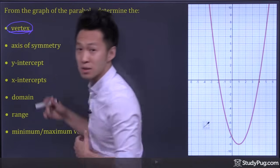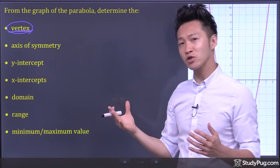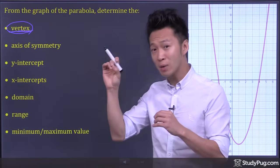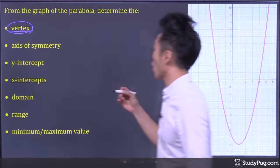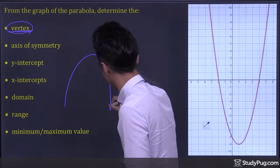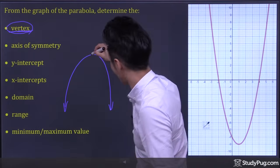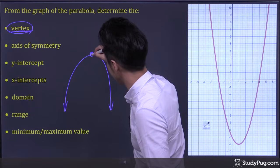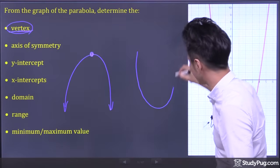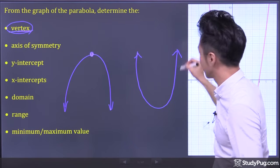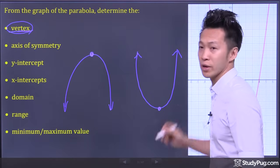The word vertex means peak. So the vertex of a quadratic function is the peak point on a parabola, which means for a parabola opening down, the vertex is the highest point. Now for a parabola opening up, the vertex is the lowest point.